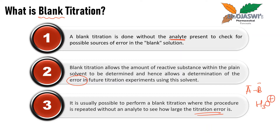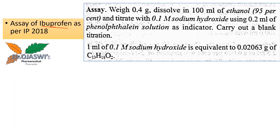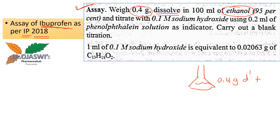Now let us see the example of assay of ibuprofen from the Indian Pharmacopoeia 2018. Ibuprofen is practically insoluble in water, so ethanol, an organic solvent, is used to dissolve 0.4 grams of ibuprofen. In the conical flask, 0.4 grams of ibuprofen is weighed, ethanol is added, phenolphthalein solution is added as indicator, and the solution is titrated with 0.1 molar sodium hydroxide.